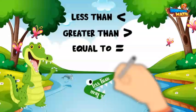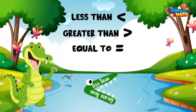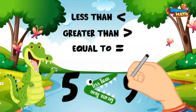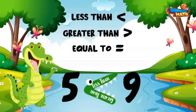The symbol looks a bit like an alligator's mouth. The alligator always wants to eat the bigger number. Let's compare the numbers 5 and 9. The symbol opens up to the 9 because the alligator wants to eat the bigger number.